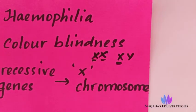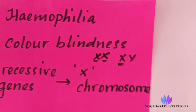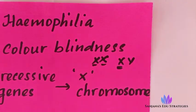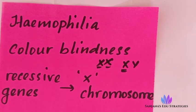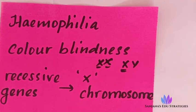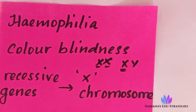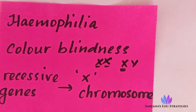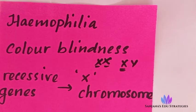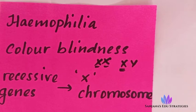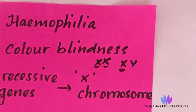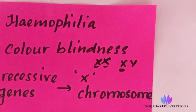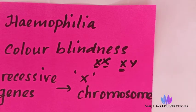X-linked inheritance means the recessive genes of these two diseases will be present in the X chromosome. Now, what is hemophilia? Hemophilia is a bleeder's disease, meaning blood fails to clot. When a cut happens, blood normally clots after a few minutes. But in hemophilia, blood continues to bleed without clotting.